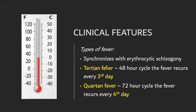The type of fever is synchronized with erythrocytic schizogony — which is the asexual cycle. We have the famous tertian fever, which is a 48-hour cycle where fever recurs every third day. Quartan fever is a 72-hour cycle where fever recurs every fourth day. Tertian: every third day; quartan (quattro): every fourth day.